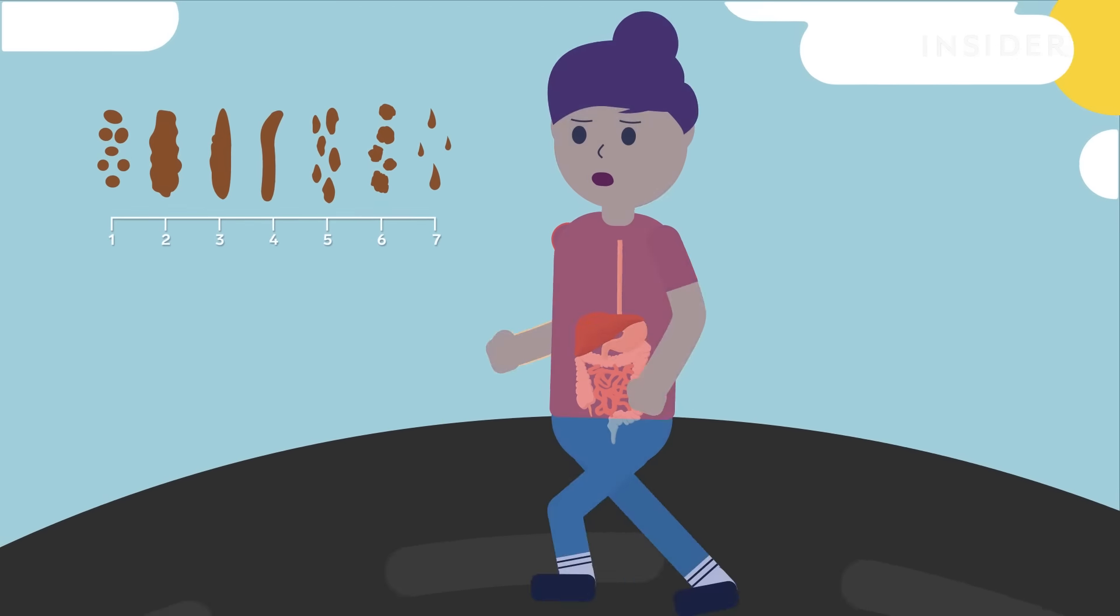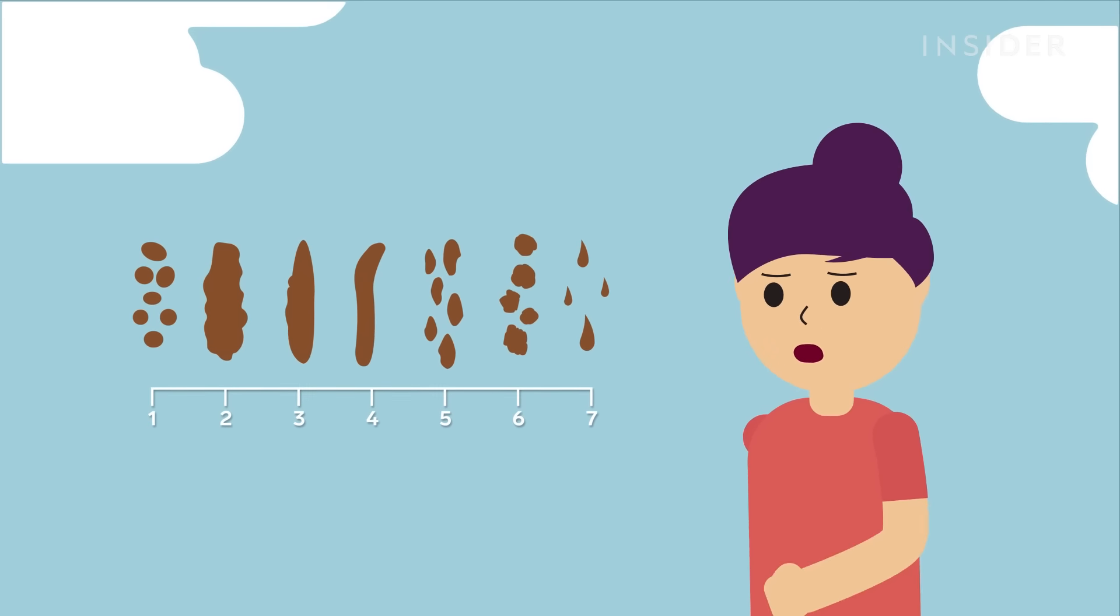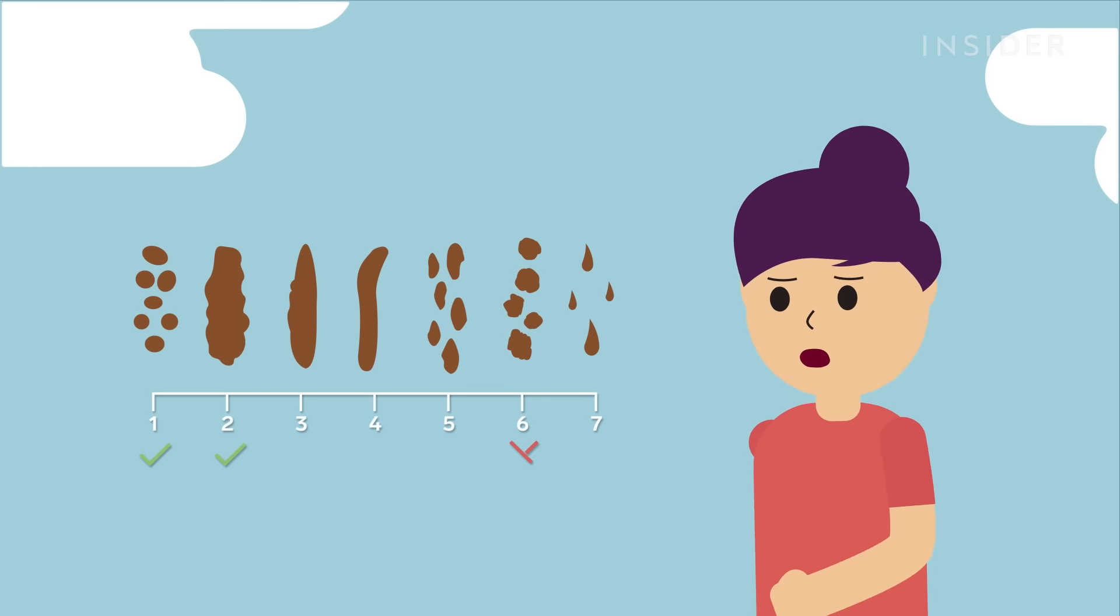And wet, soft poops are easier to pass. So going for a quick jog could be helpful if you're constipated. Not so much if you have diarrhea.